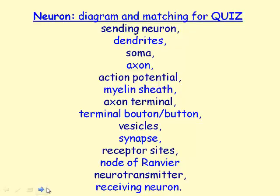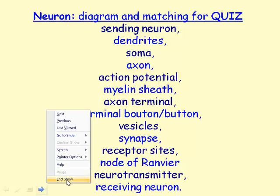You're responsible to correctly match this list of parts. The sending neuron, the dendrites, the soma, the axon, the action potential, myelin sheath, axon terminal, terminal bouton or button, vesicles, synapse, receptor sites, nodes of Ranvier, neurotransmitter, and receiving neuron. I'll give you the diagram and I'll give you the terms and you'll have to match them for your in-class quiz.